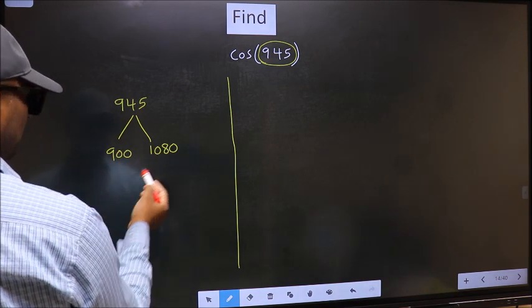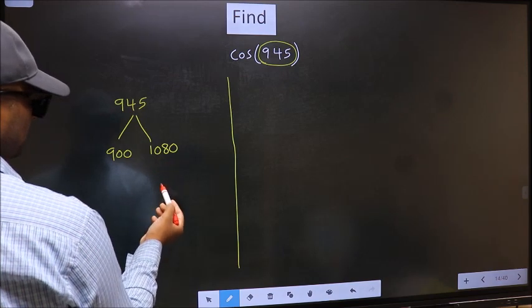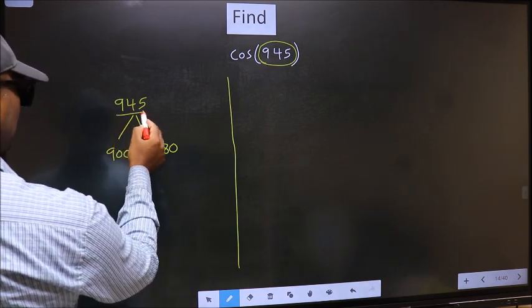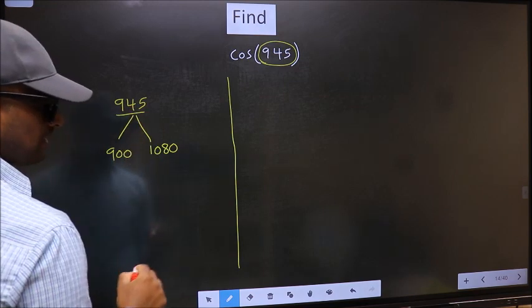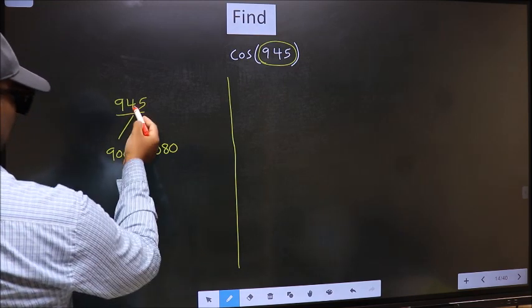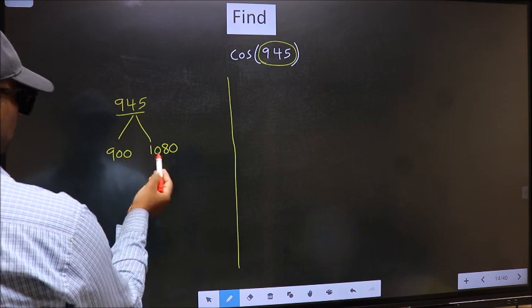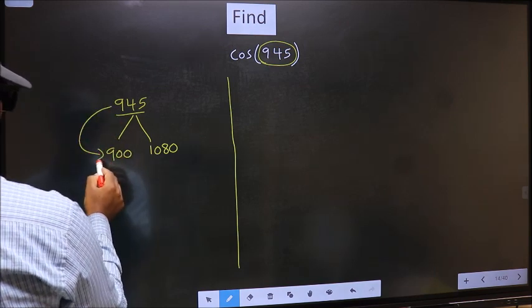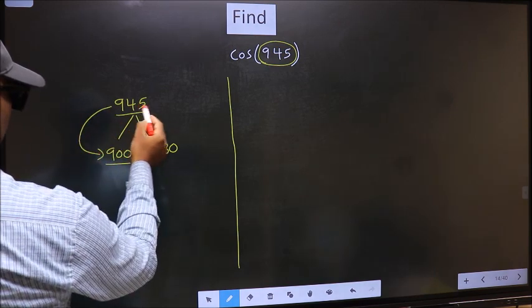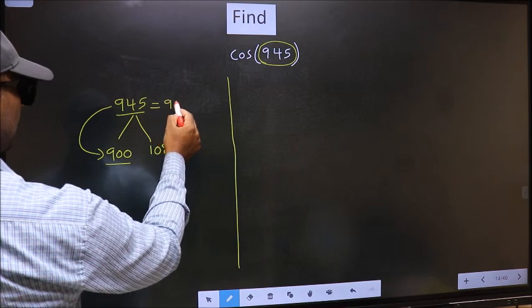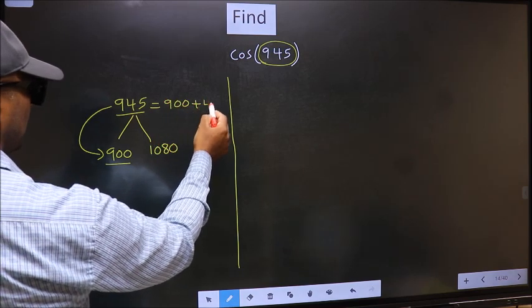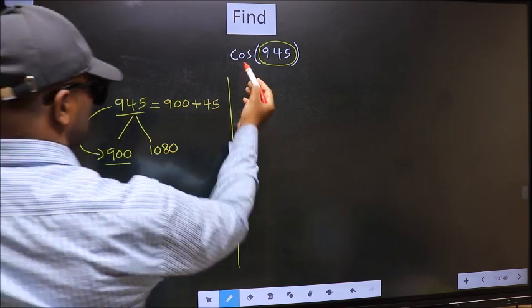This is 180 into 5, this is 180 into 6. Between these two numbers, 945 lies. Next, 945 is close to which number? This is close to 900. So in place of this, now we should write 900 plus 45.